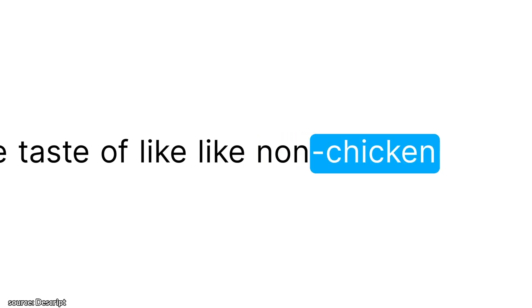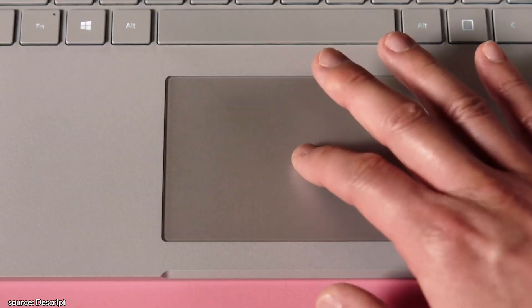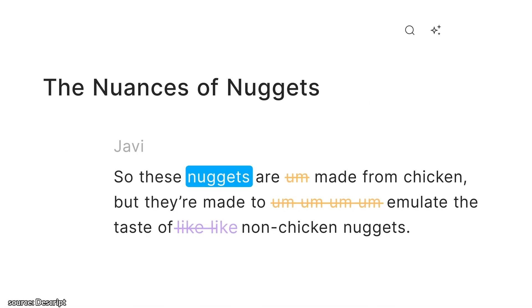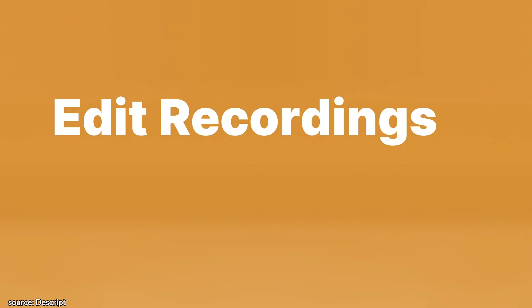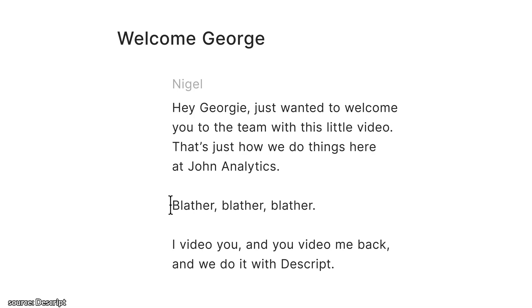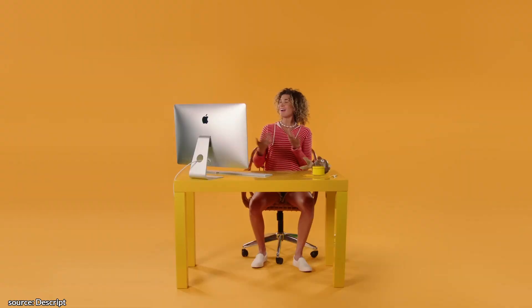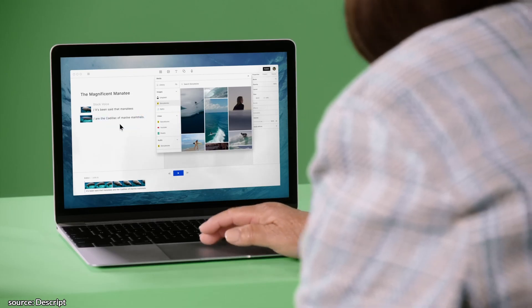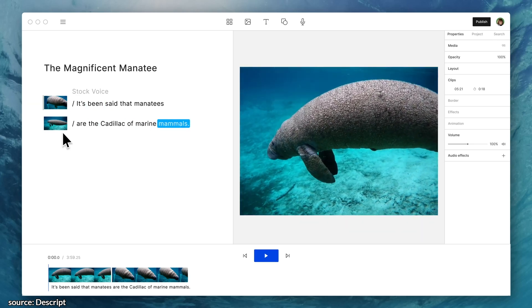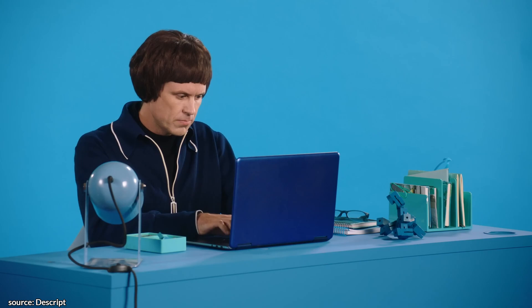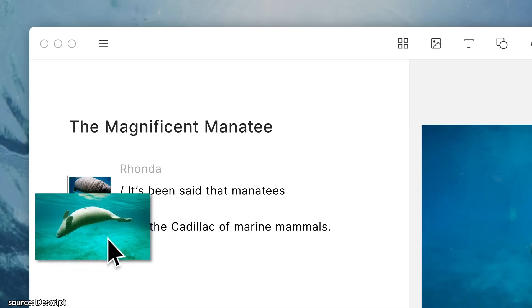Emulate the taste of non-chicken nuggets. So these nuggets are made from chicken, but they're made to emulate the taste of non-chicken nuggets. Dope — that's much better. Then edit all the blather out of your videos, because my time is very precious. 'It's been said that manatees are the Cadillac of marine mammals.' Perfecto. Can you fix the color while you're there? Make it less teal and more cerulean? Sure.